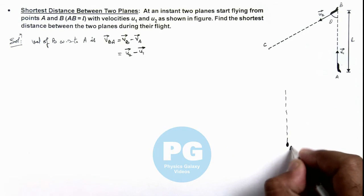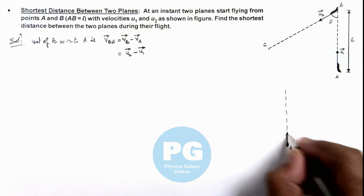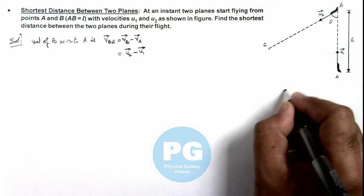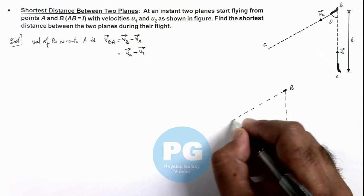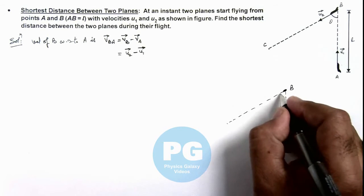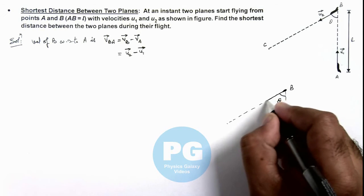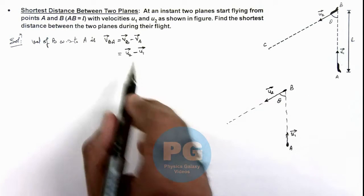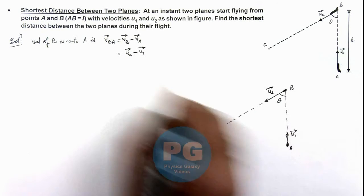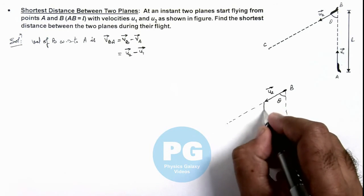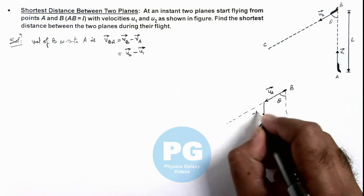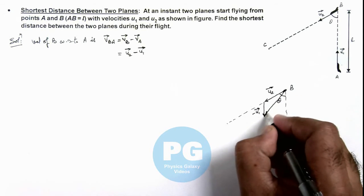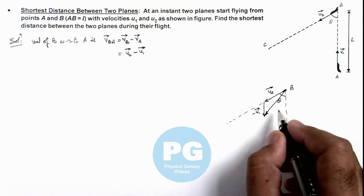Say this is plane A moving with the velocity vector u1, and this is plane B which is moving in this direction toward point C at an angle theta with velocity vector u2. Now if we subtract u1 vector from u2, this minus u1 vector is opposite to it. The resulting direction of B will be in this direction, which is the velocity of B with respect to A.